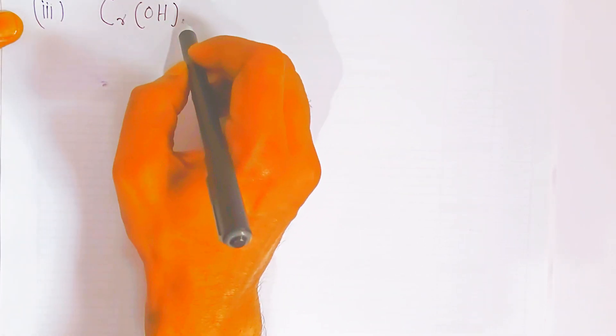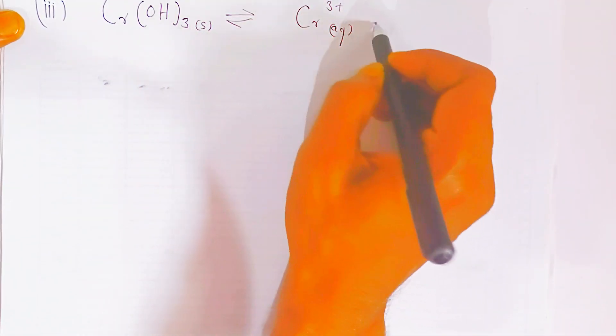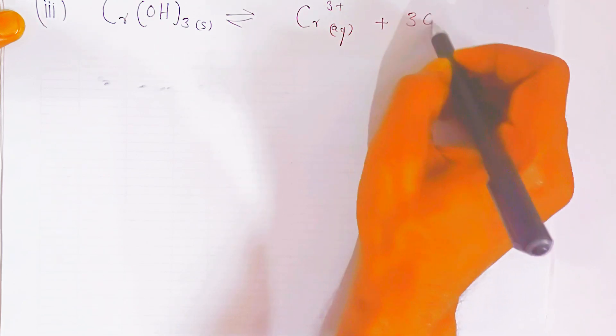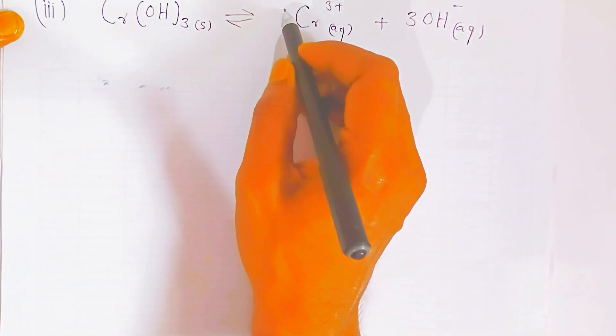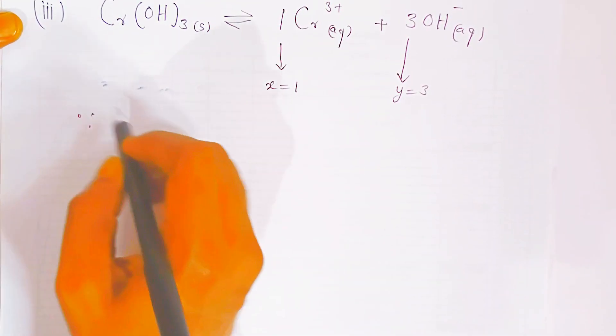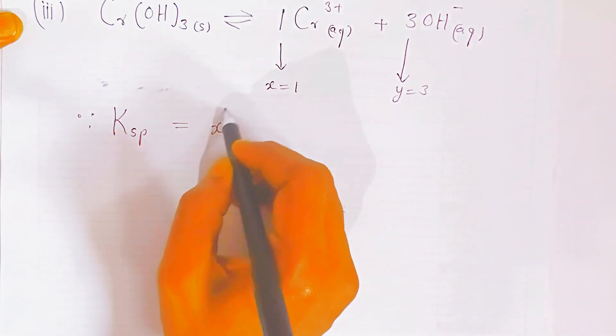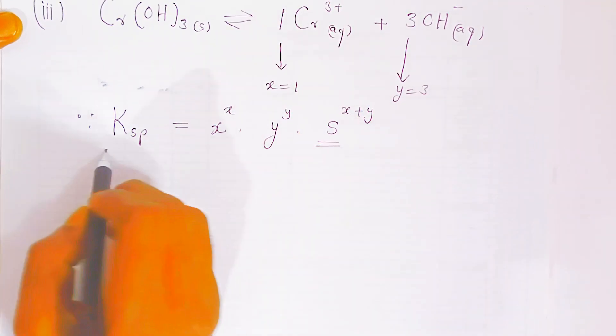The third salt is chromium hydroxide, Cr(OH)₃. When it dissociates in aqueous solution, one chromium is present and three hydroxyl groups, so we get one Cr³⁺ cation and three OH⁻ anions. Since there is no written coefficient for chromium, x = 1, and the coefficient for hydroxide is y = 3. The solubility product formula is Ksp = x^x · y^y · S^(x+y).